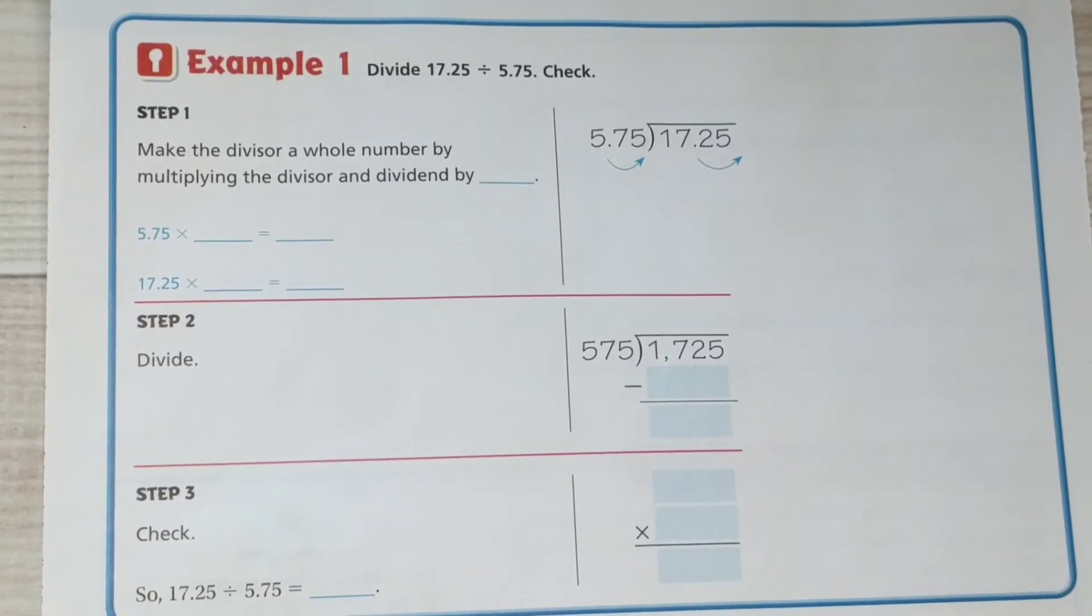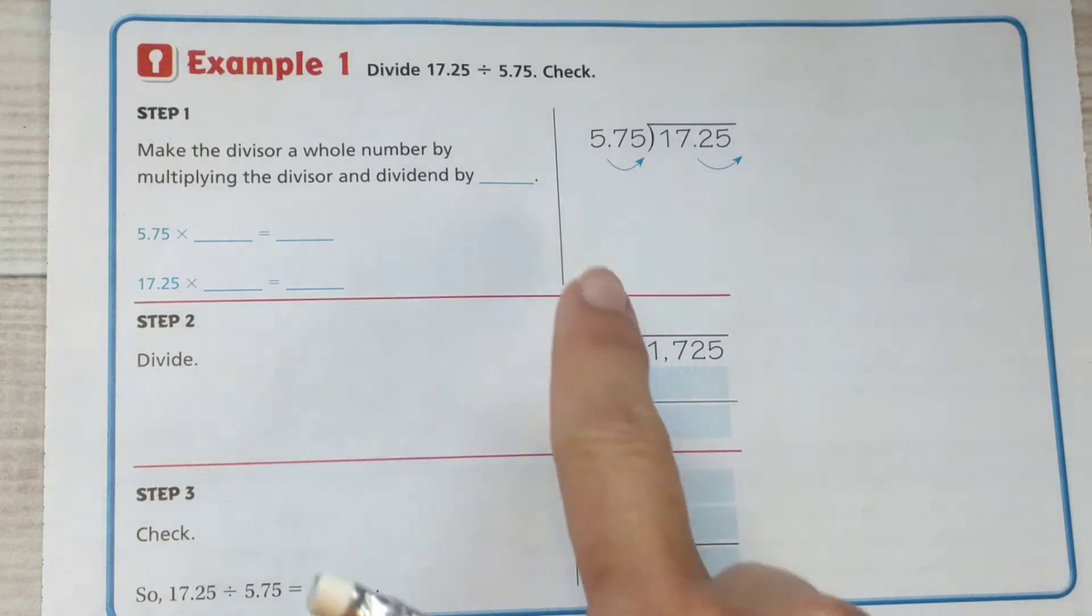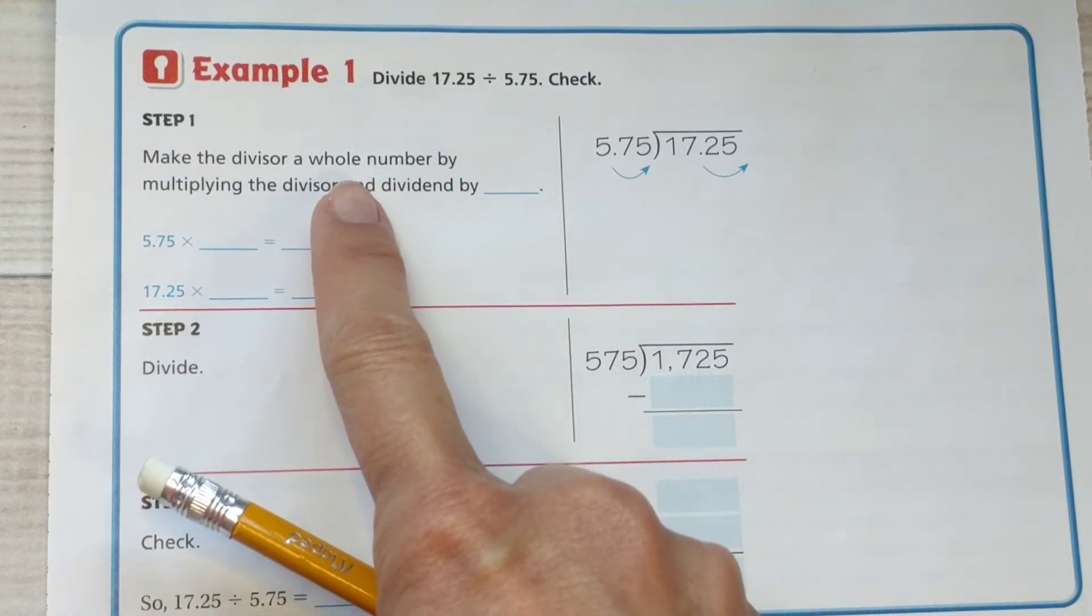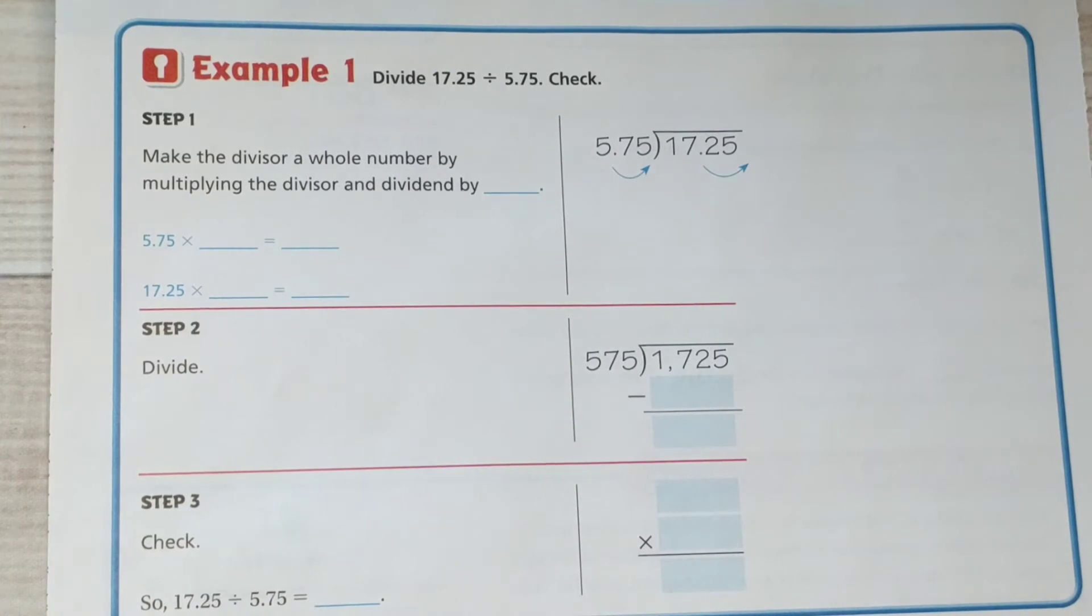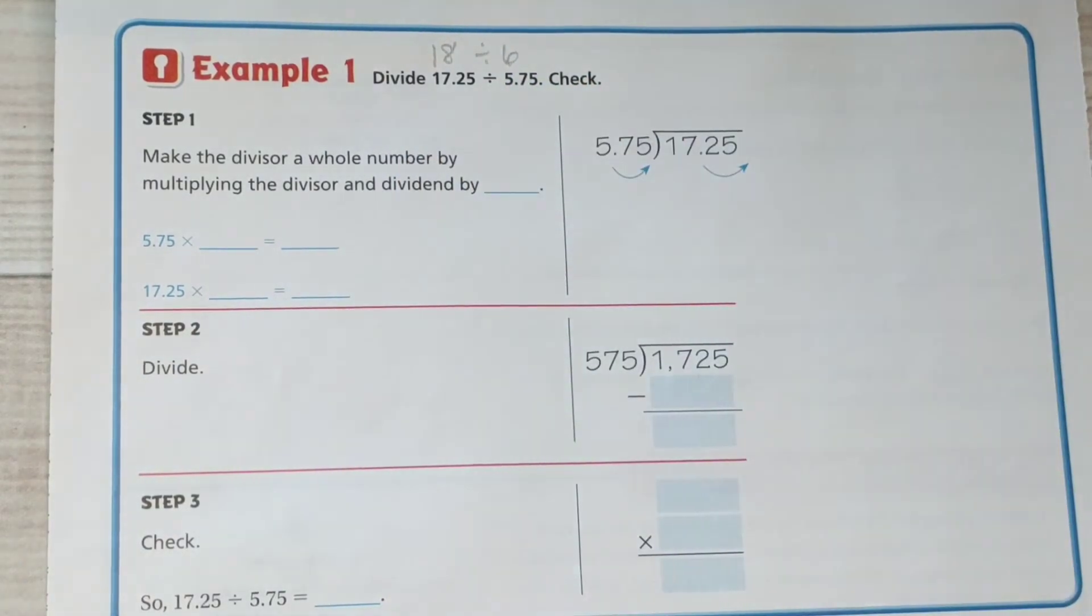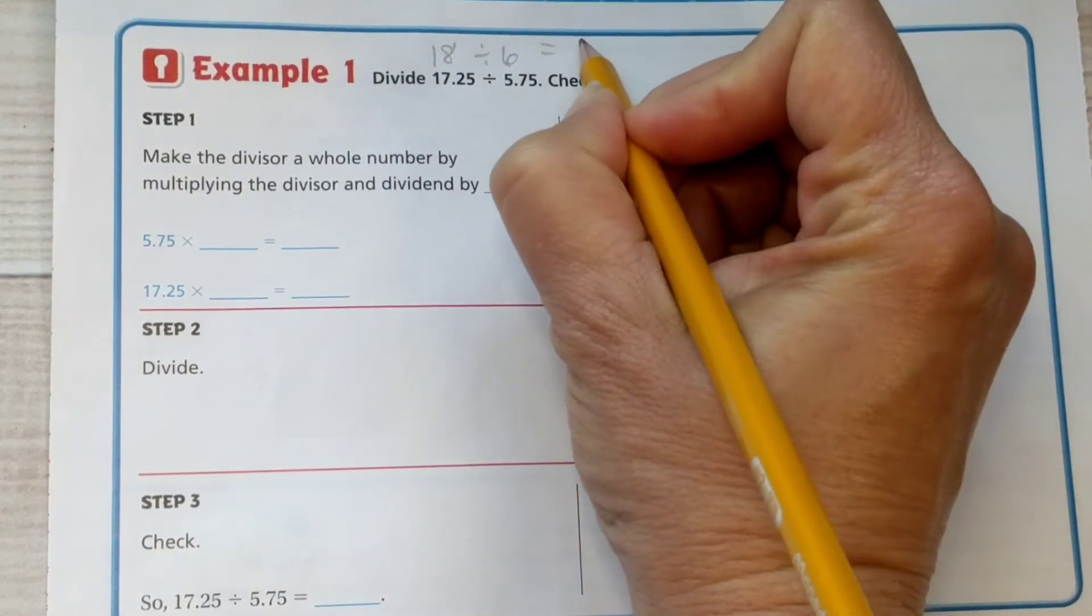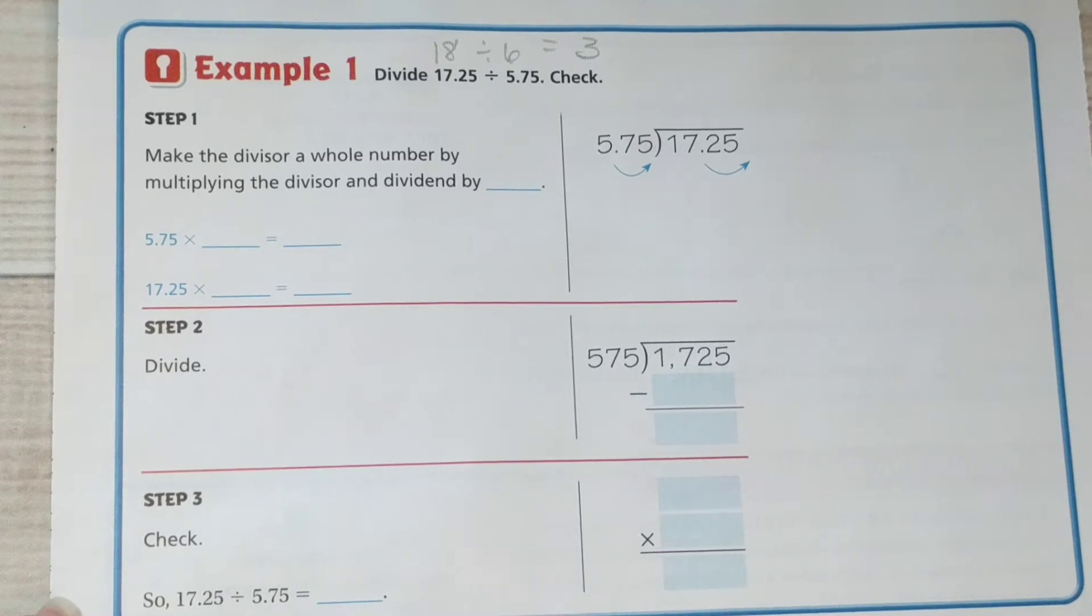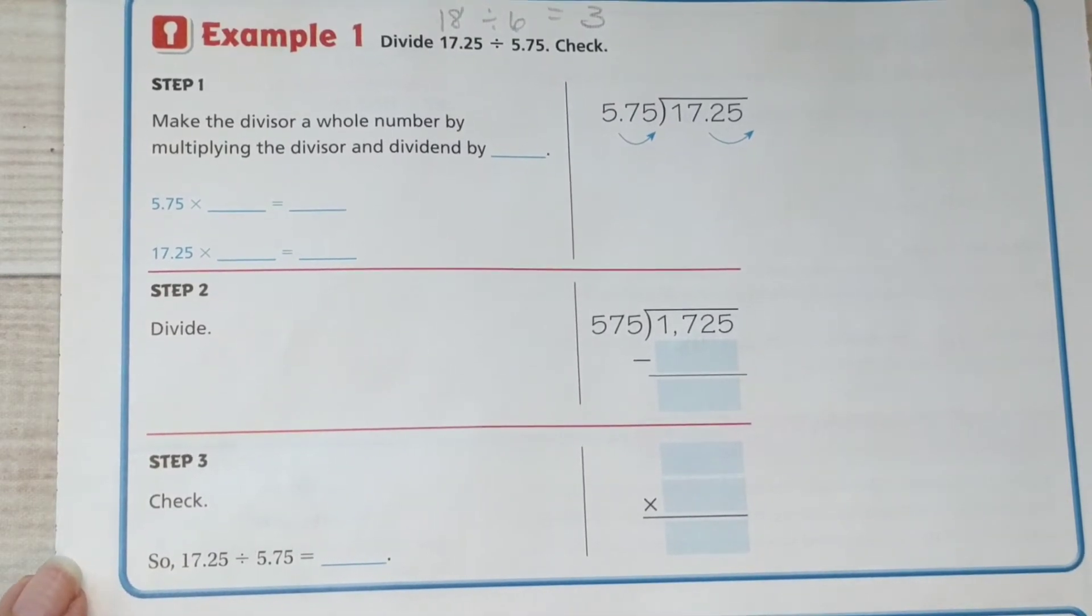Let's take a look at the next page. So divide 17 and 25 hundredths by 5 and 75 hundredths. First we're going to make... I'm wondering why they don't have us do an estimate first. I'm going to do an estimate first. I'm looking at this, thinking this is pretty close to 18, and this is pretty close to 6. So I know that my final answer is going to be in the ballpark of 3. I like to do a little estimate first. My dad taught me to do that when I was a kid, and it makes a big difference in understanding what you're doing and knowing that your results are accurate.